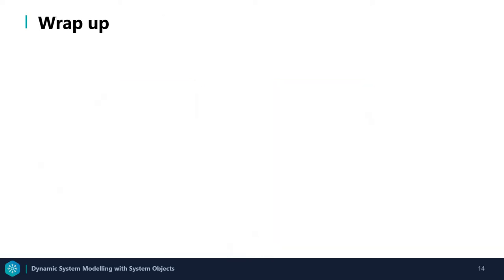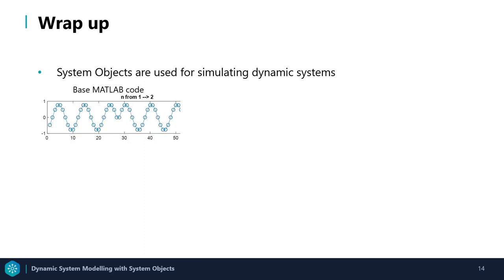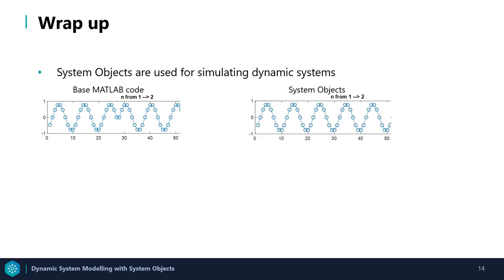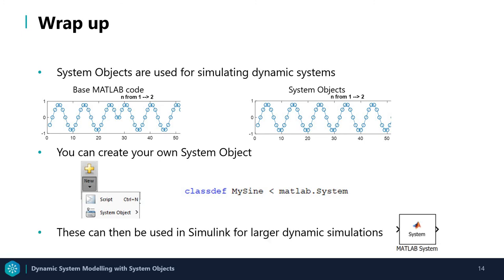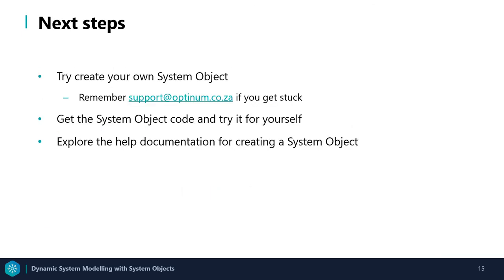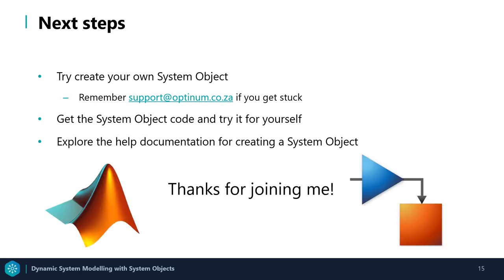Let's wrap this up. System objects are used for simulating dynamic systems because they have internal storage states that can preserve integrity and produce the correct results. You can also create your own system object using the MATLAB templates, and these can then be used in Simulink for larger dynamic simulations. So now, why don't you try to create your own system object? Remember, our support team is there if you get stuck. You can also get the code demonstrated during this presentation to try it out for yourself, and explore the help documentation for creating a system object. Thanks for joining me — see you next time.